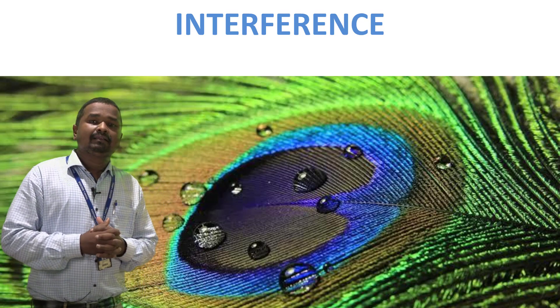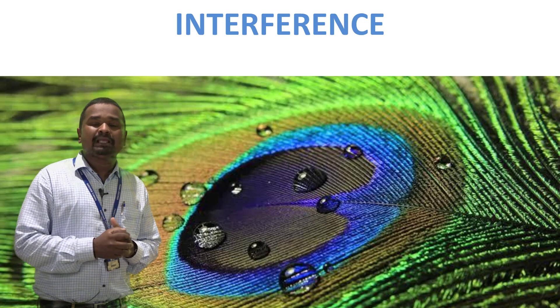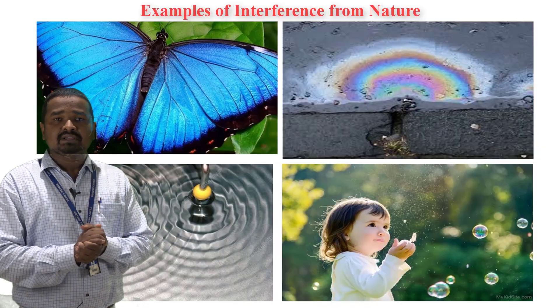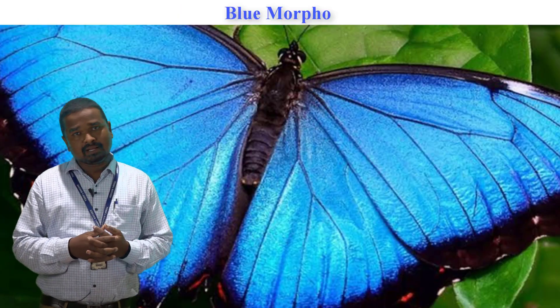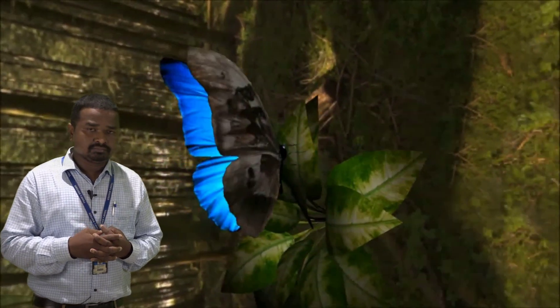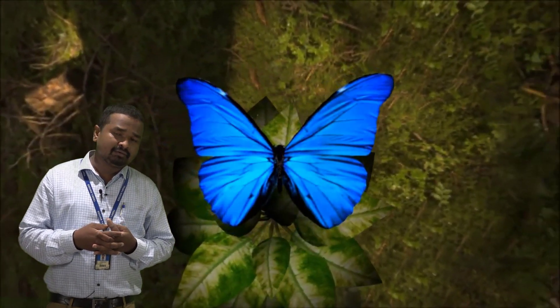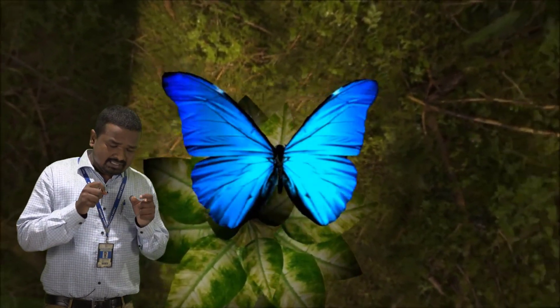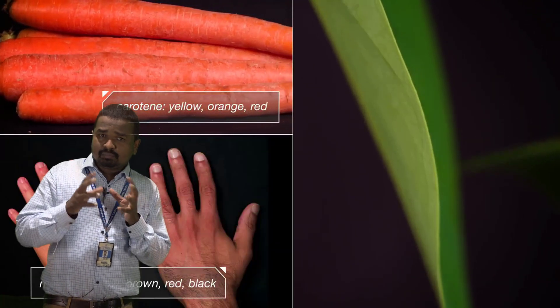Before going into detail of the topic, we are going to see a few examples of interference from nature. The first example is the blue morpho butterfly. This blue morpho butterfly is of intense blue color, and it is found in tropical forests of Latin America. This intense blue color is not because of organic color or pigmentation — it is because of the interference of light.